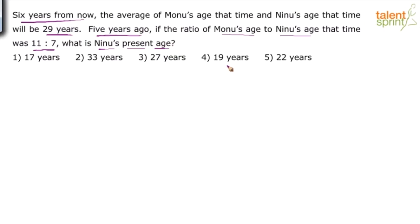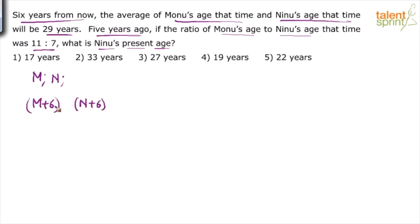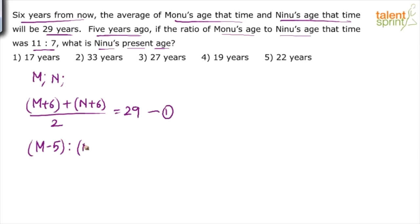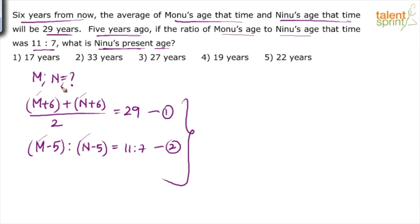Let's use the conventional method. Assume Mono's present age is M and Nino's present age is N. Six years from now, the average of their ages: (M + 6 + N + 6) / 2 = 29 — that's equation one. Five years ago the ratio was 11 to 7, so (M − 5) / (N − 5) = 11/7 — that's equation two. We solve these two equations to find N, Nino's present age.